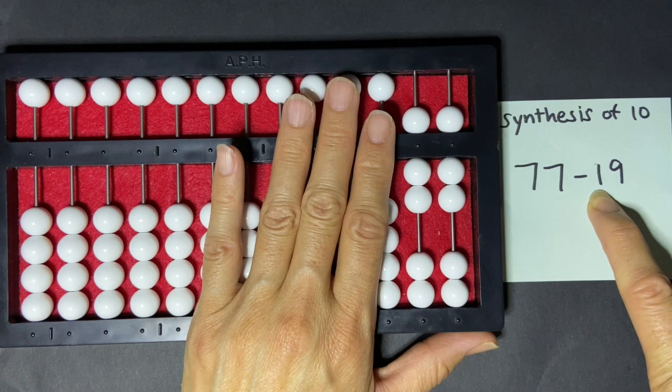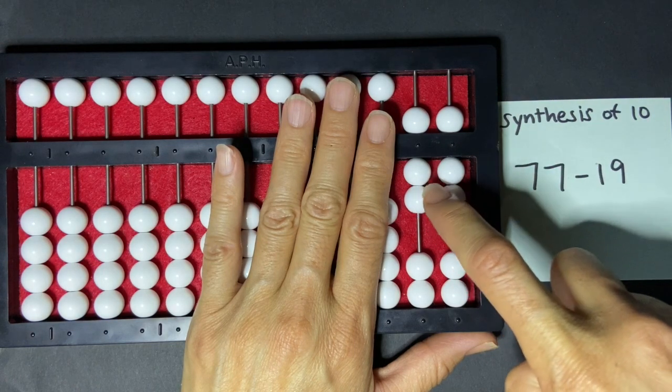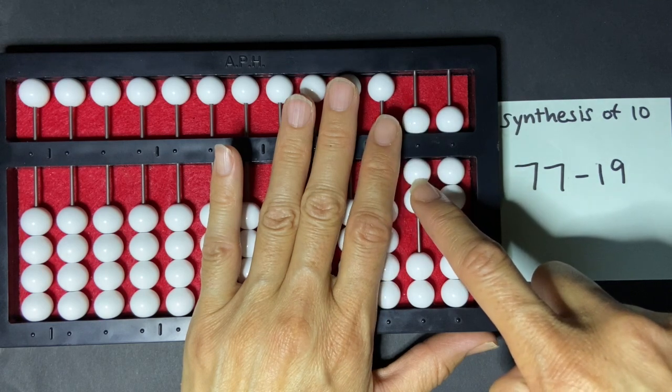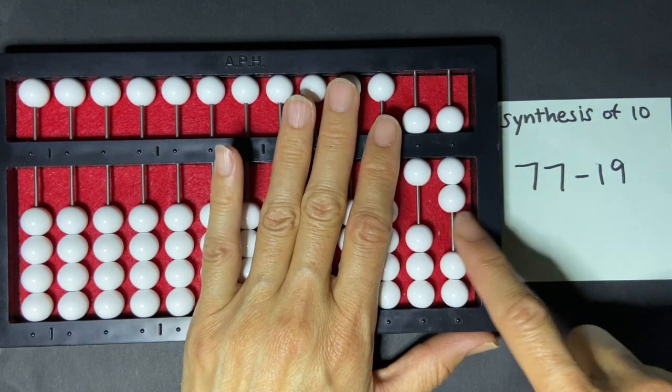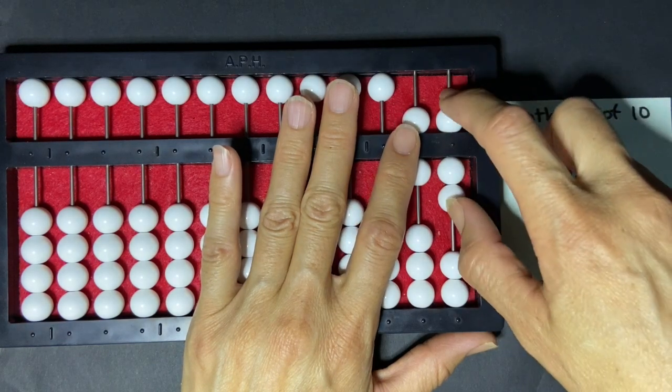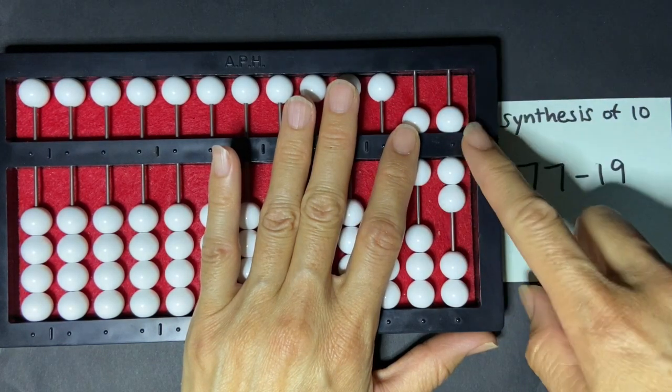So I can directly take away the 1, so I'm going to clear 1 from the 10's counting bar. And now I need to clear 9 from the units, but I only have 7 that's set here in the units rod.